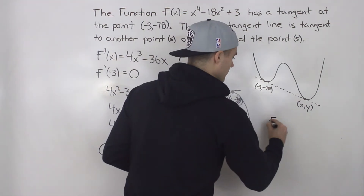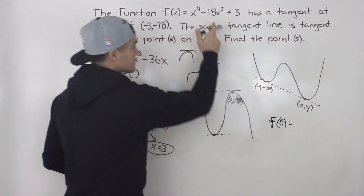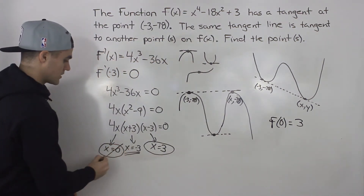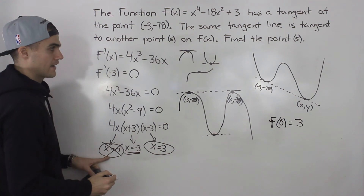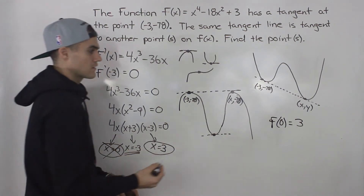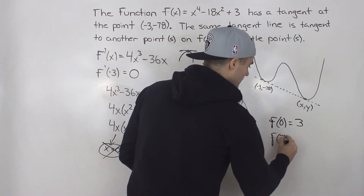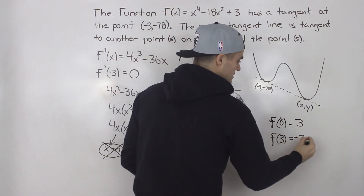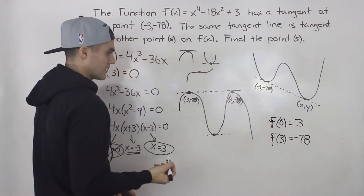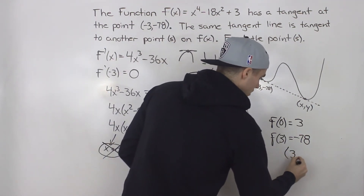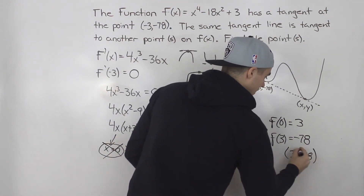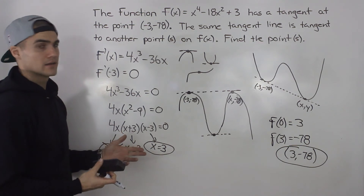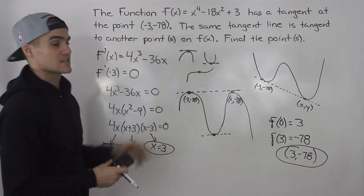Starting with x = 0: plugging into the function gives a y-value of 3. So x = 0 does not have the same tangent line. What about x = 3? Plugging 3 into the function gives that same y-value of -78. So the answer is the point (3, -78) — that is the other point that has the same tangent line as (-3, -78).